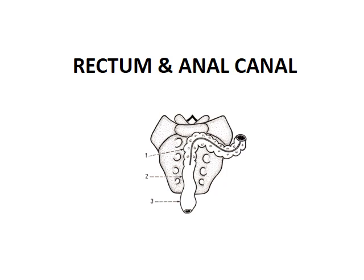The rectum is continuous with the sigmoid colon above, and ends below at about two or three centimeters distal to the tip of the coccyx, where it becomes continuous with the anal canal. So the rectum begins at the sigmoid colon and ends at the anal canal. The anal canal lies in the perineum below the floor of the pelvic cavity.